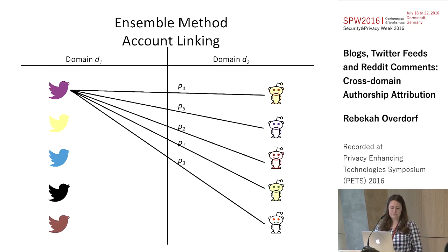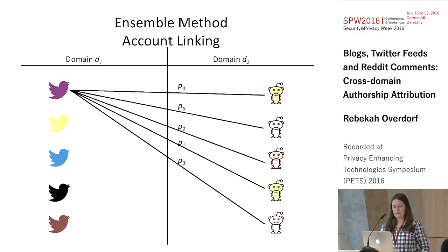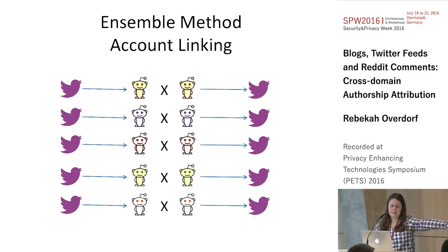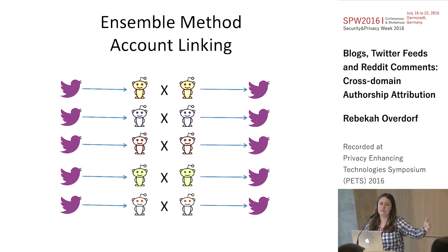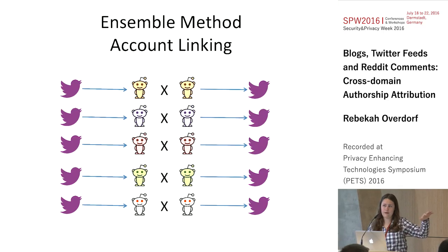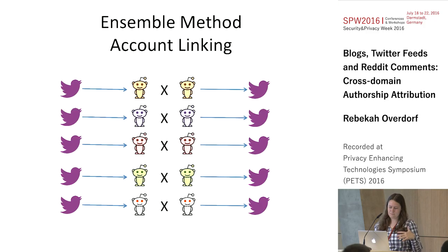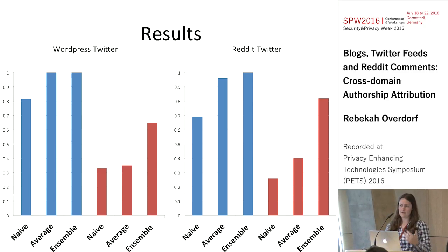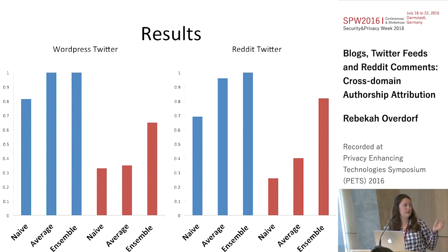In full account linking, where we have many tweets and Reddit accounts to link, we train on all Twitter accounts, test on each Reddit account, recording probability values, then flip and do the same the other way. For every Twitter account, we get the probability it was written by each Reddit user, and vice versa — then multiply across to combine probabilities and get the best match. This is where we see the largest jump in accuracy. This idea comes from a problem called Doppelganger Finder, linking users across different forums, and it works really well in the cross-domain case.